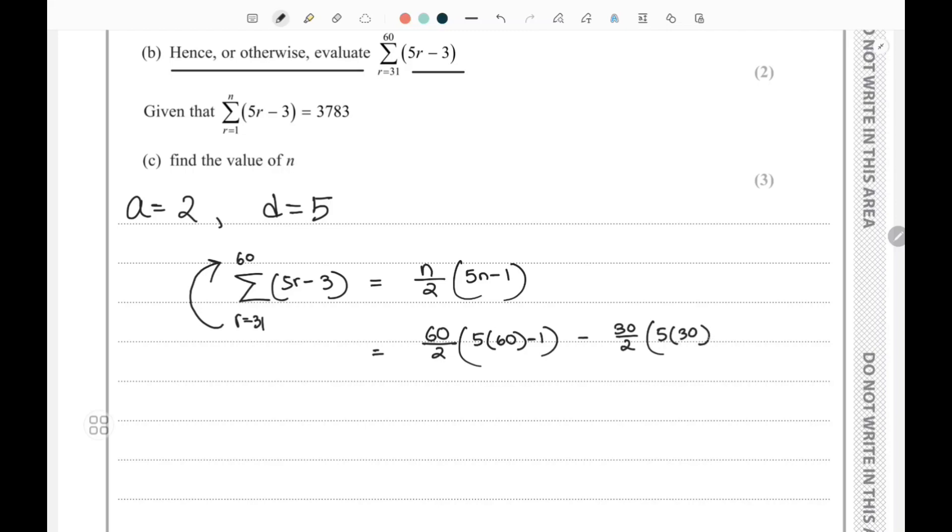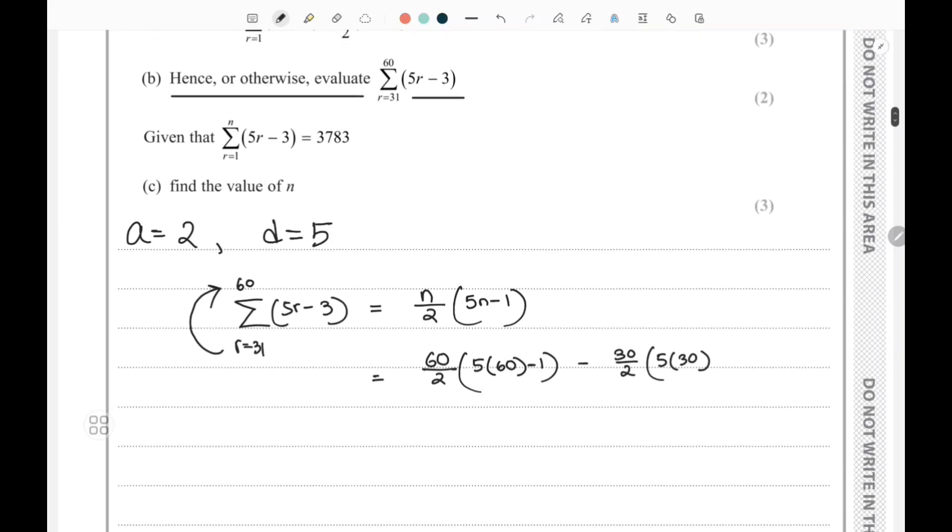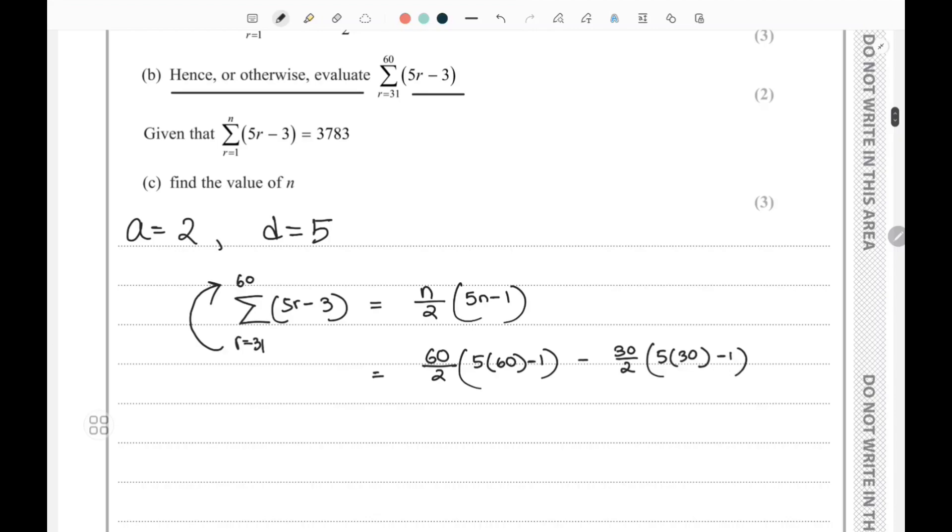Here I'm going to put the values, so it becomes 30 times 299 minus 15 times 149. This becomes 8970 minus 2235, which is 6735.